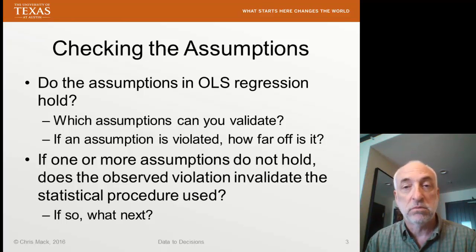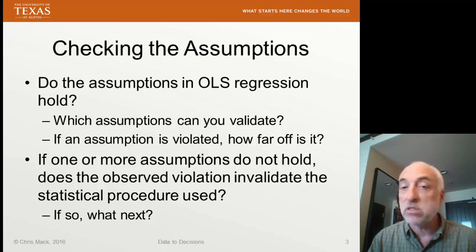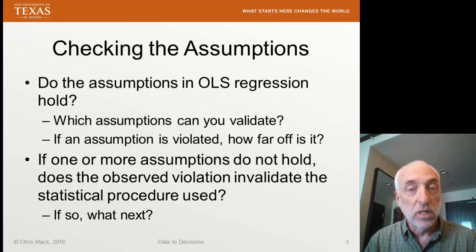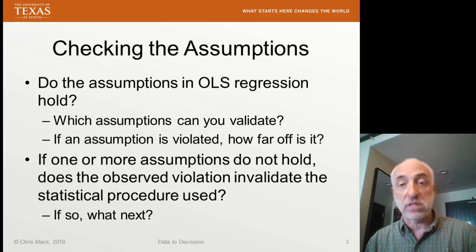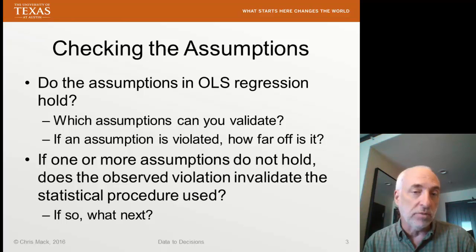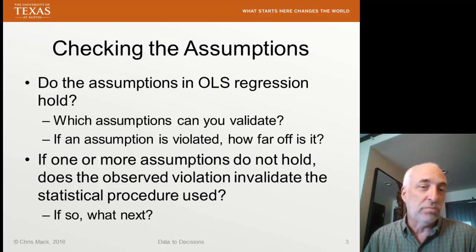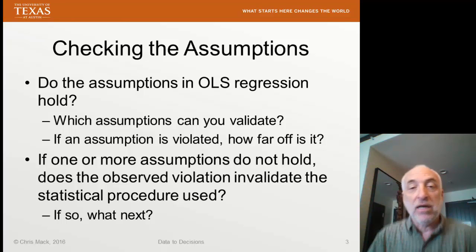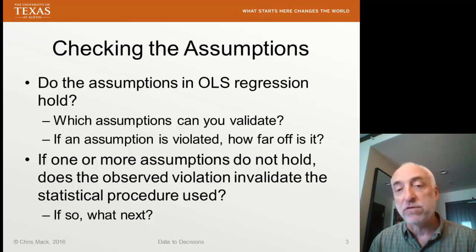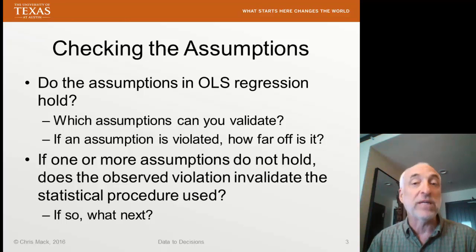Now, what if these OLS regression assumptions are not true? Well, we need to check and find out. Look through that list of six — which of those assumptions can you validate, and how do we validate them? If an assumption is invalid or we suspect that it is, how far off is it? Is it a small difference that doesn't matter too much, or a big difference that will really mess up our regression? And if one or more assumptions do not hold, what does that do to the statistical validity of our parameters, and is there something we can do about it?